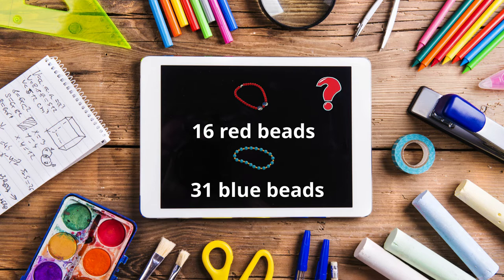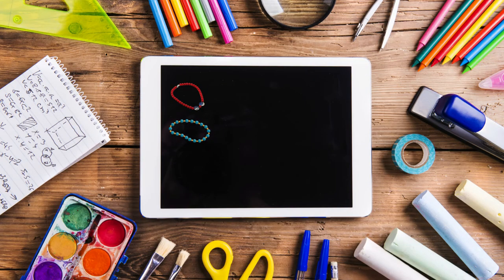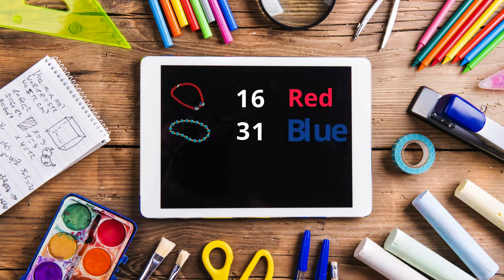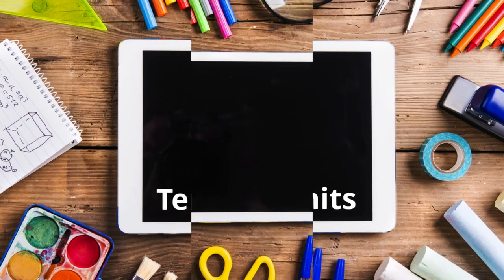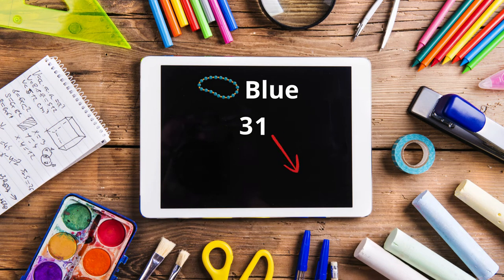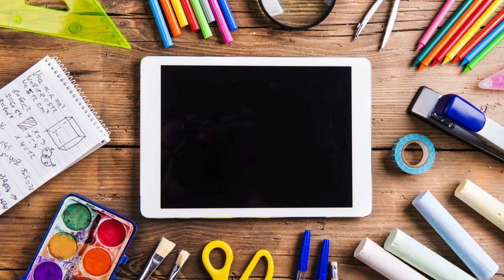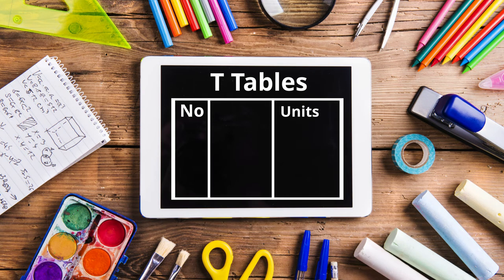We can find out by adding both numbers together. So we have two numbers here: 16 and 31. From the base value lesson you know that in 16 there are six units and one ten, and in 31 there are one unit and three tens. Let's add them using a T-table for units and tens.